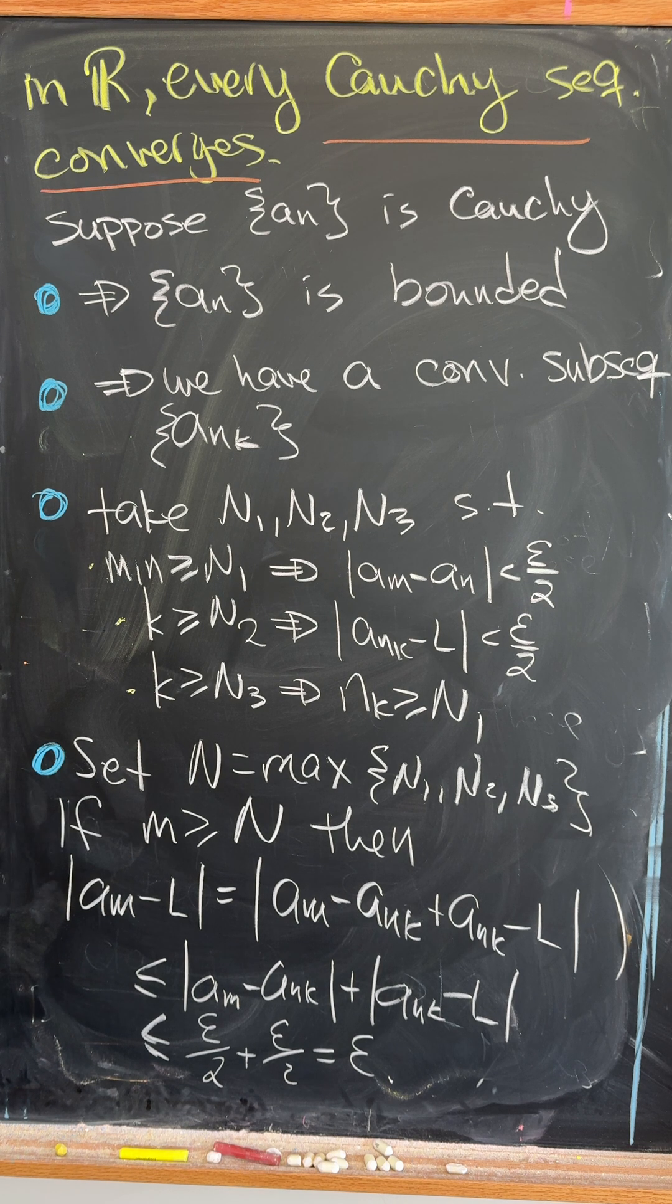Now let's set capital N equal to the maximum of all three of these, and observe that if M is bigger than or equal to capital N, then we can tease out this inequality that we have the absolute value of AM minus L is less than epsilon, simply by adding and subtracting this A sub NK, where we have chosen K to also be bigger than the maximum of those three.